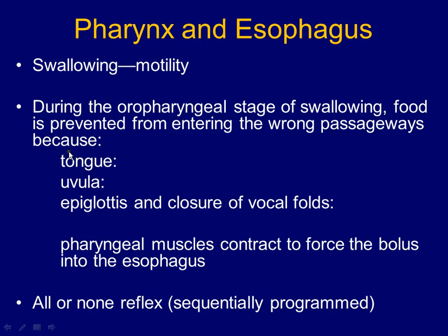During the oropharyngeal stage of swallowing, food is prevented from entering wrong pathways by four structures working in sync: the tongue pushes food to the roof of the mouth and back; the uvula blocks the nasopharynx; the epiglottis covers the larynx; and the vocal folds snap shut. Then pharyngeal muscles force the bolus into the esophagus. This is an all-or-none reflex.